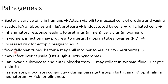Further, from the fallopian tubes, bacteria may spill into the peritoneal cavity leading to peritonitis, and it may infect the liver capsule causing Fitzhugh-Curtis syndrome. Neisseria gonorrhea can also invade the submucosa and enter the bloodstream, where bacteria may collect in synovial fluid leading to septic arthritis.